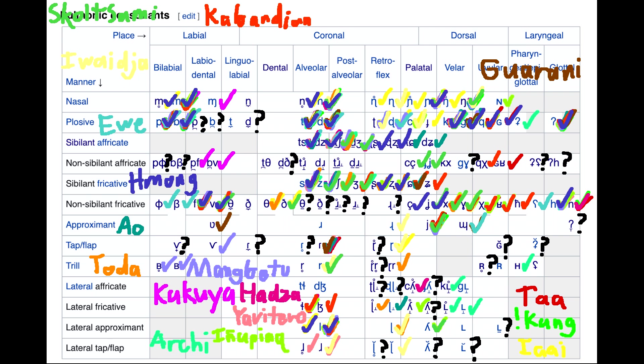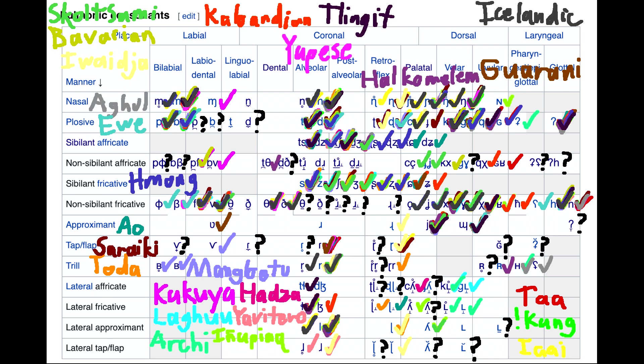Toda also has the voiced retroflex trill. Lágu gives us the voiced velar lateral affricate and absolutely nothing else. Bavarian is the only language I could find with a phonemic voiceless velar affricate. Icelandic has the voiceless alveolar trill. Big Nambas is a fun one, as it is one of a handful of languages to have lingualabial consonants. I'm sure there are some with more, but I couldn't find any on Wikipedia.